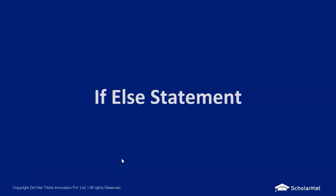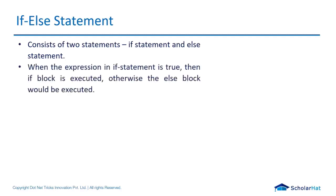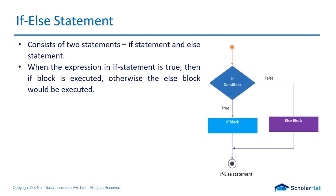The if-else statement is one of the conditional blocks. When we have one condition and an alternative for that condition, we prefer to use the if-else statement. The pitfall of simple if is that all if statements are evaluated. If-else consists of two parts: the if statement and the otherwise, which is the else statement. When the if condition is true, the if block executes; otherwise the else block executes, and then the program exits.